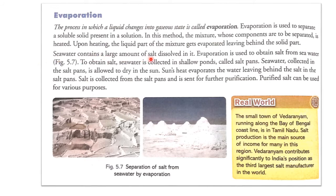Sea water contains a large amount of salt dissolved in it. Evaporation is used to obtain salt from sea water. As you can see in figure 5.7, this shows the separation of salt from sea water by evaporation.